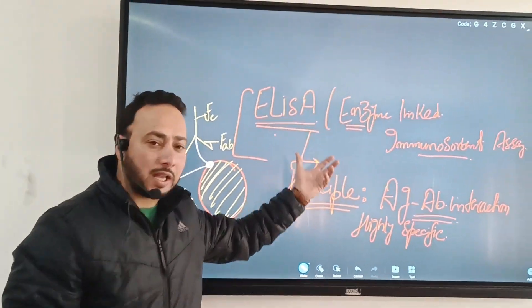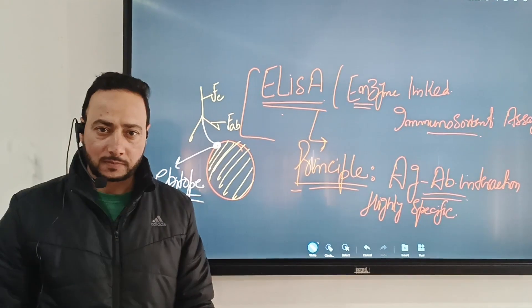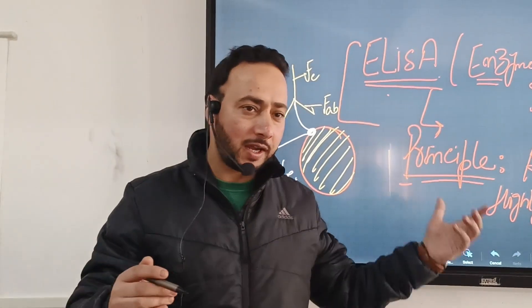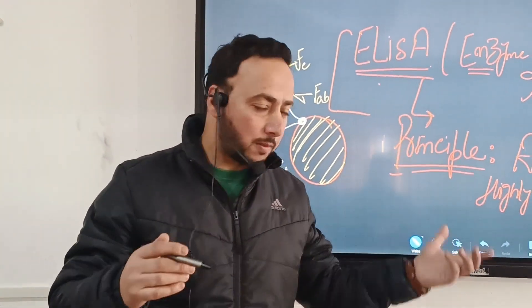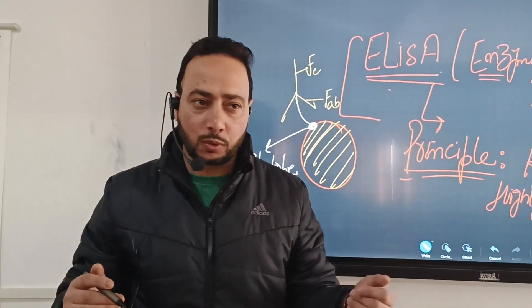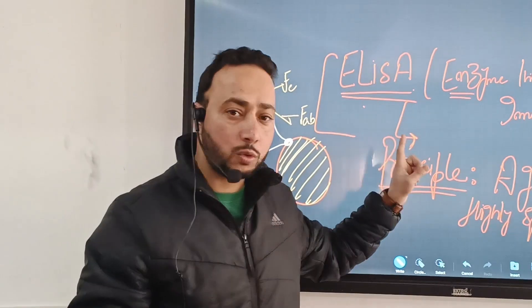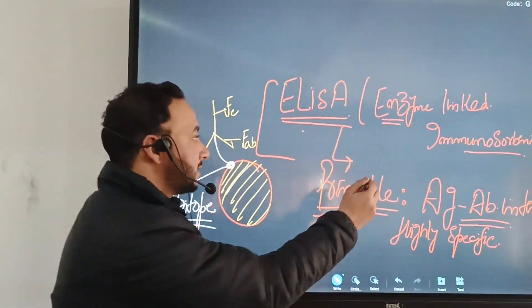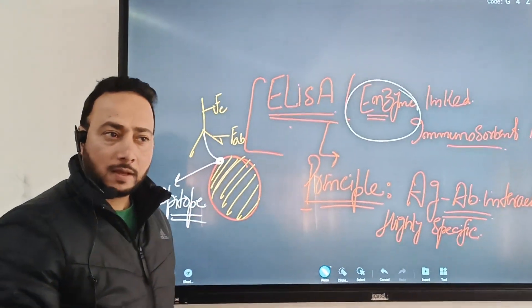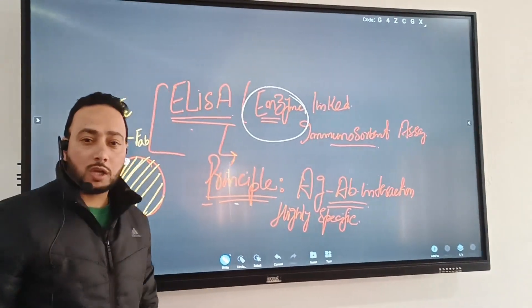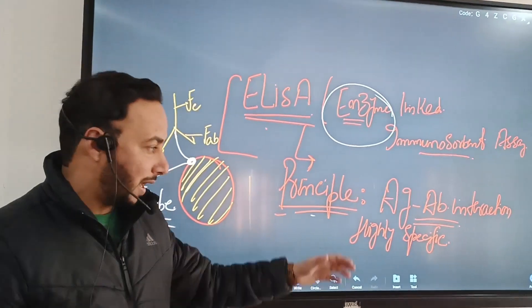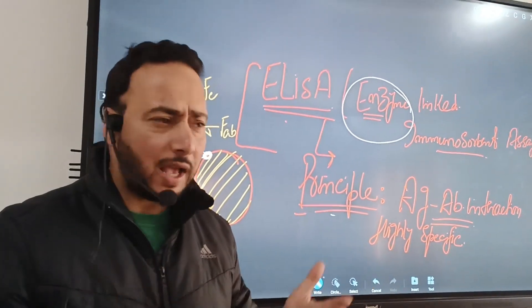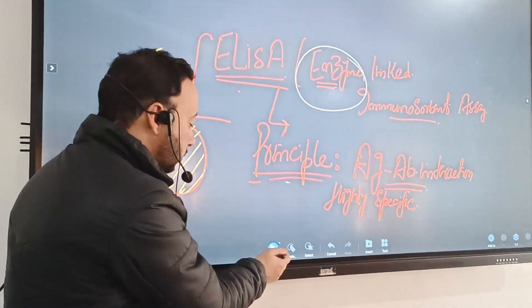Now, what is the difference between ELISA and radioimmunoassay? In radioimmunoassay, the purpose is also to identify proteins, biological compounds, antibodies, antigens, and glycoproteins, but we use radioisotopes. In ELISA, we do not use radioisotopes — as they are very hazardous to human health — we use an enzyme instead. It is also based on the same immunological principles of antigen-antibody reaction.